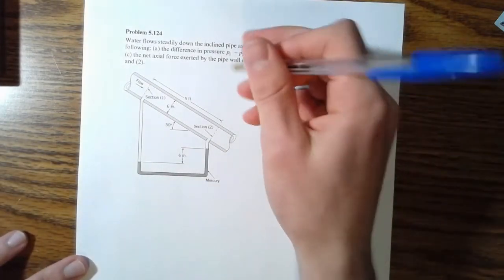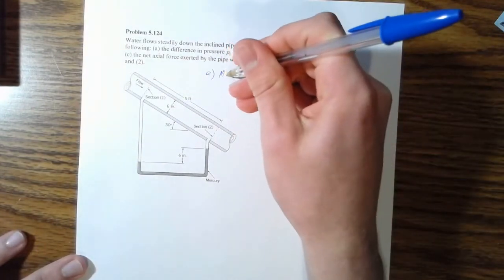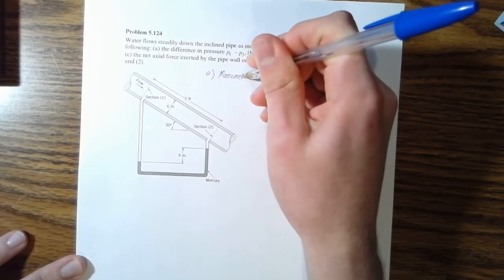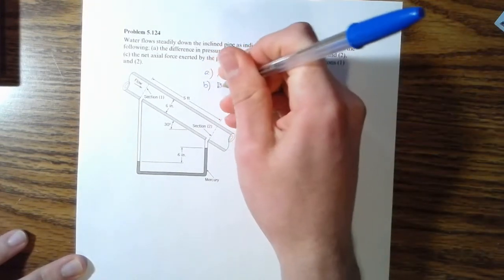All right. So part A, the pressure difference, we're going to solve that by a manometer or that's a manometer problem. Part B is solving for loss. That's a Bernoulli problem.